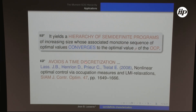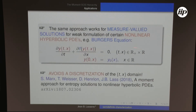This approach avoids time discretization. Rather than transferring the OCP into a large nonlinear program by time discretization, you avoid it entirely. The same approach works very recently for measure-valued solutions, a specific weak formulation for certain nonlinear hyperbolic PDEs such as Burgers' equation — a scalar, non-trivial hyperbolic PDE. Again there is a weak formulation in terms of occupation measures, another instance of the GMP, avoiding discretization of the time-space domain. This is very recent work, just submitted.